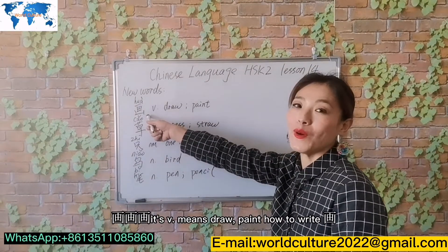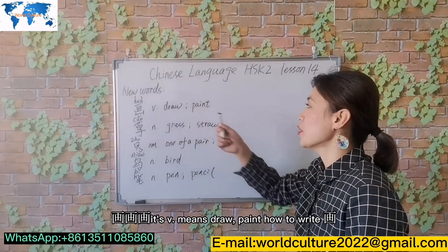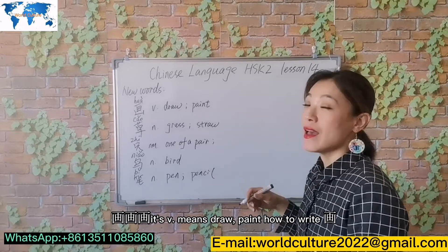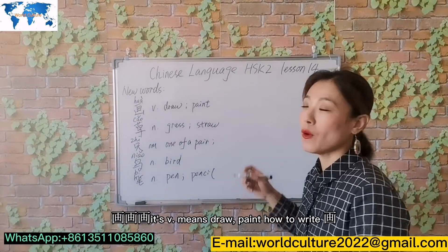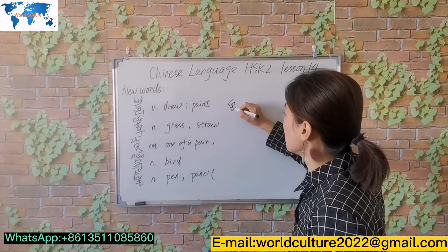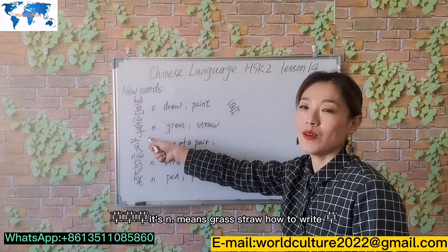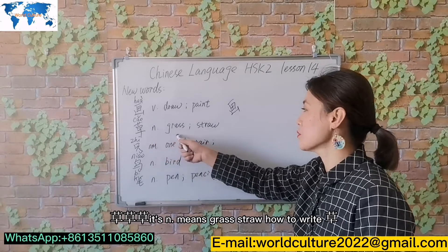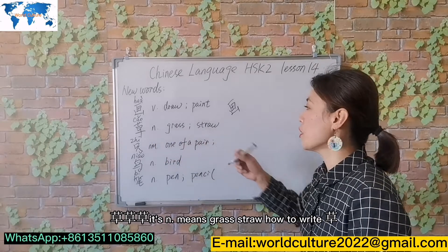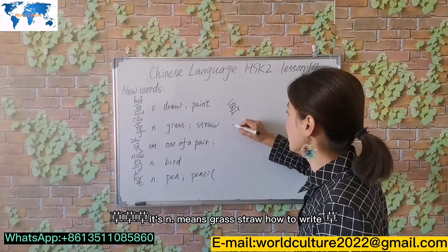画. It's a verb, means 'draw', 'paint'. How to write 画. 草. It means 'grass'. How to write 草.